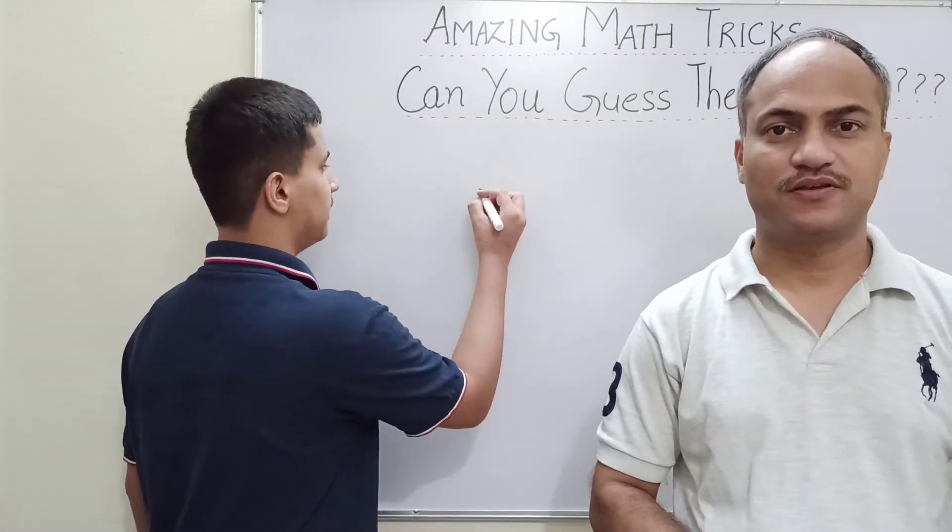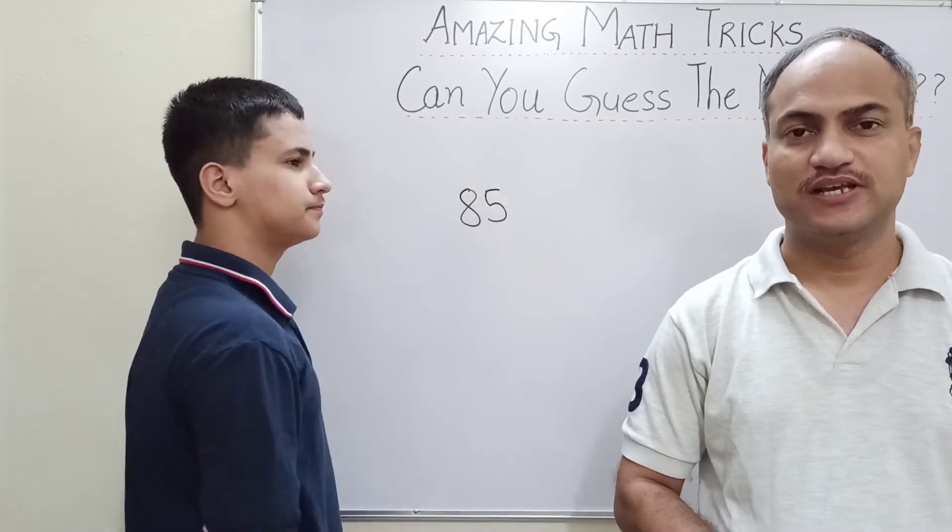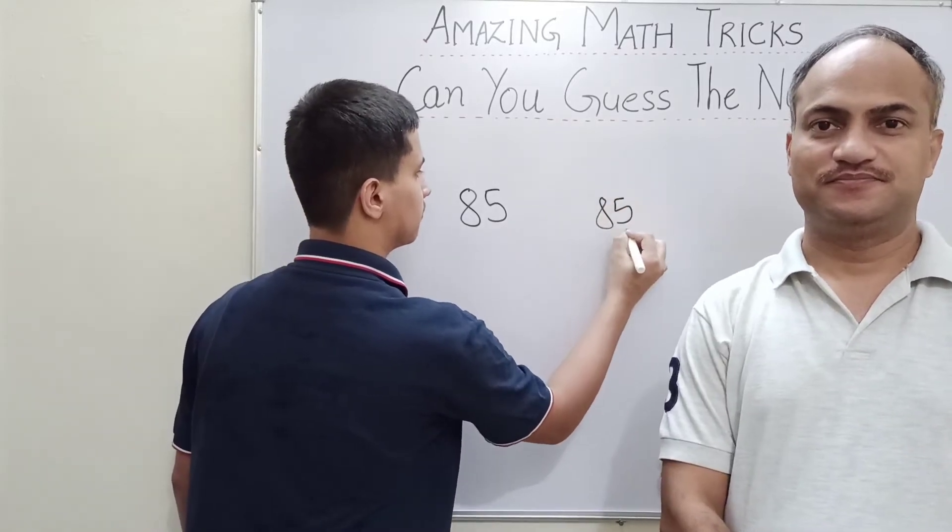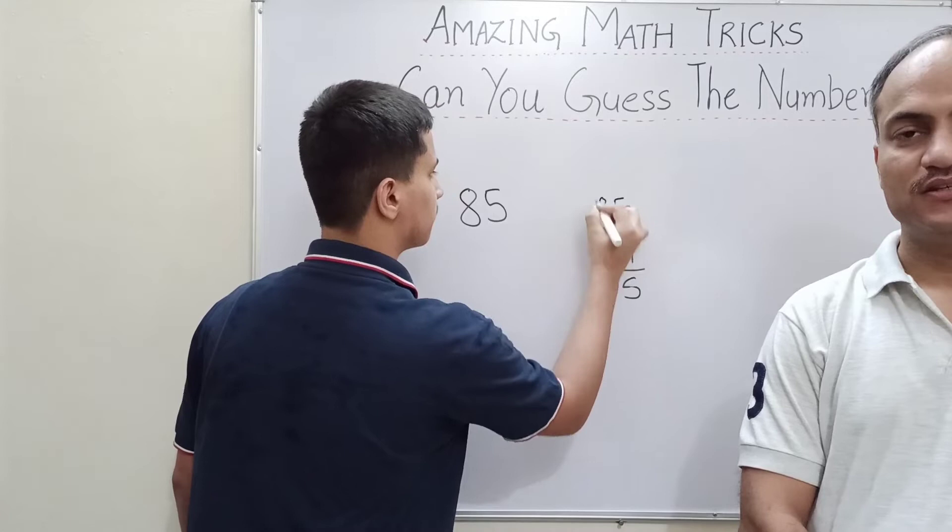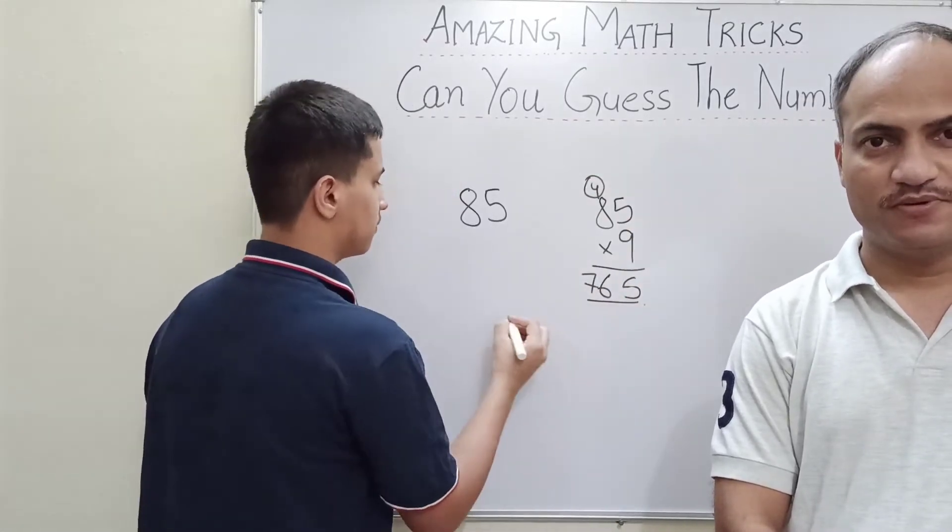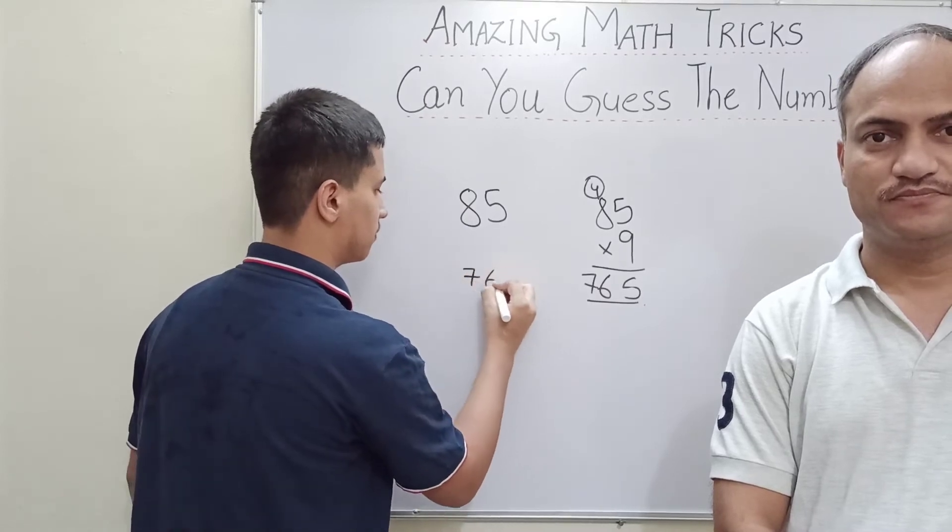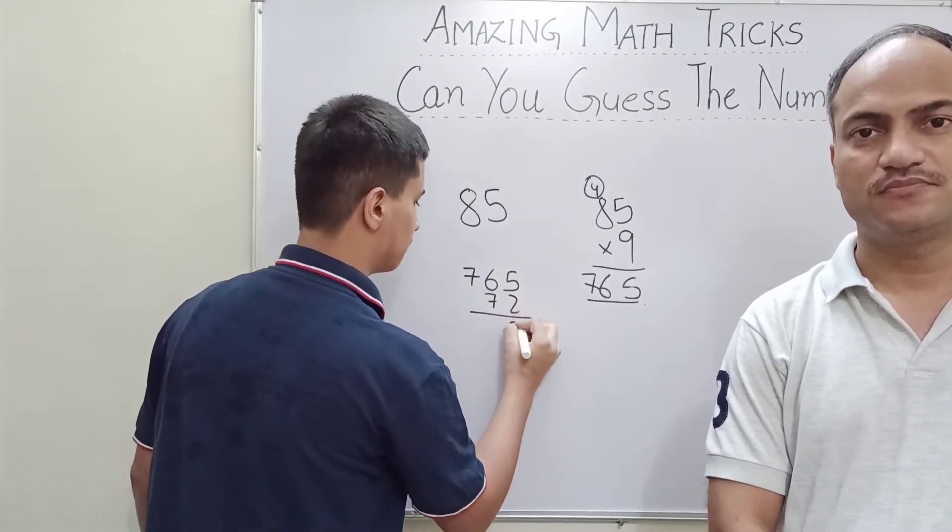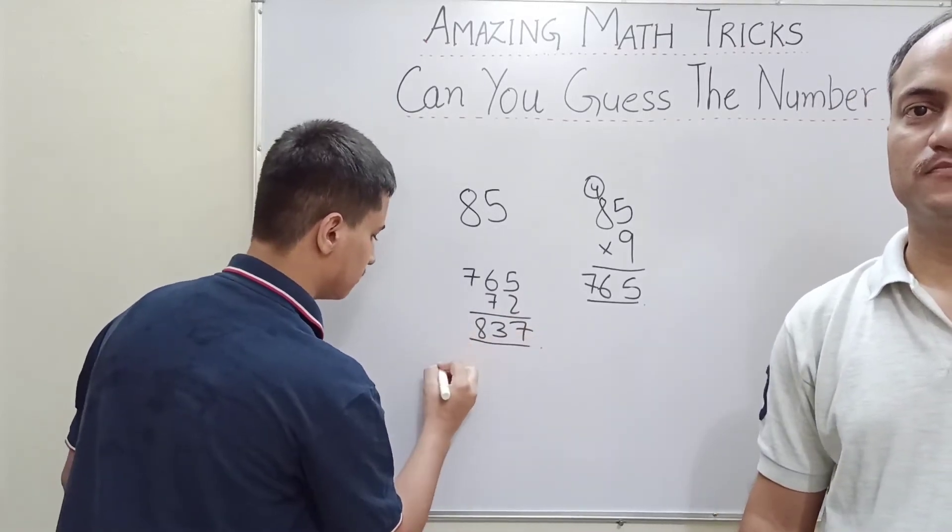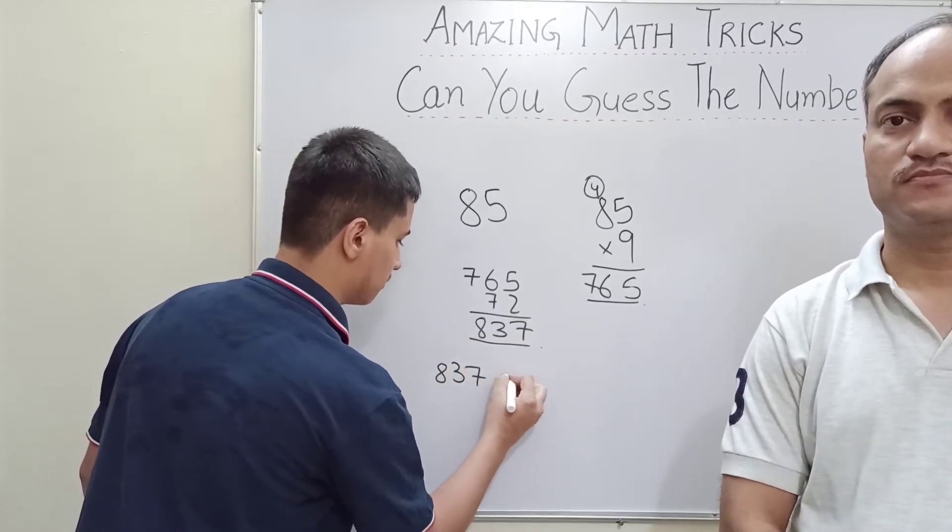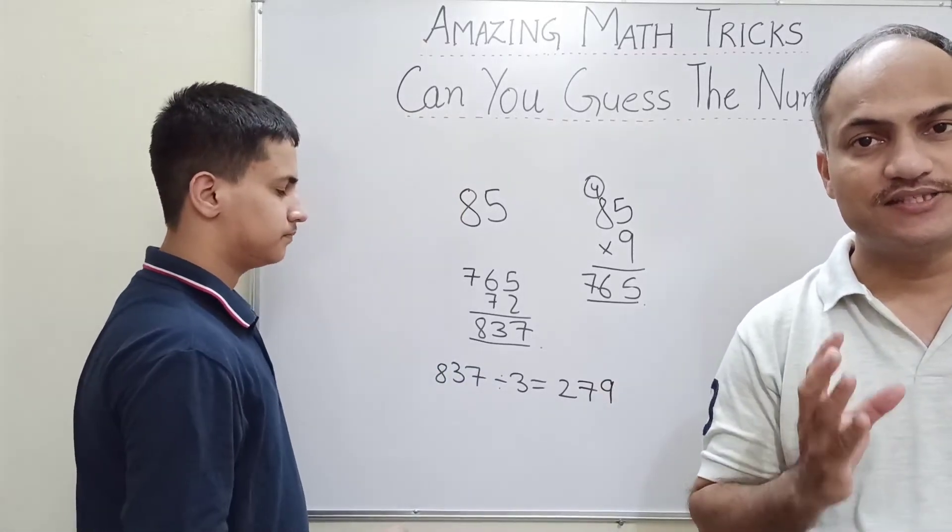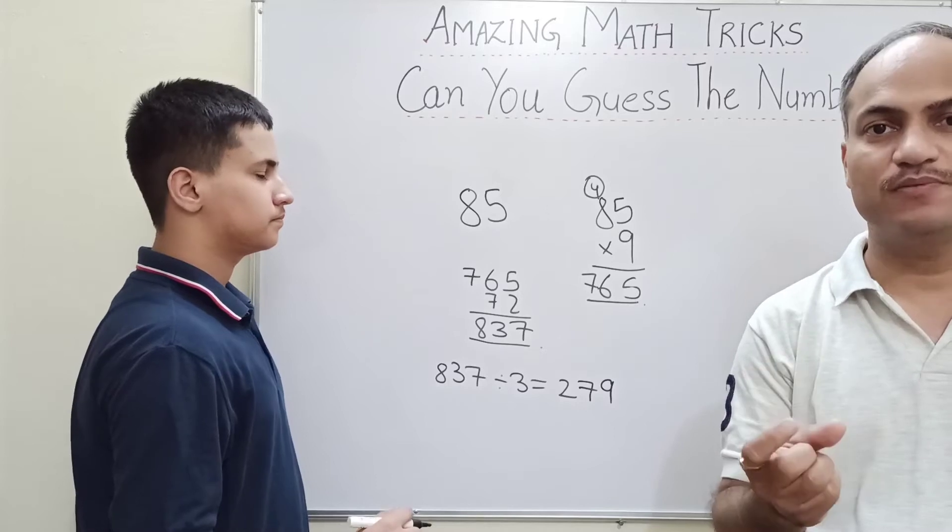Now multiply the number by 9. Now add 72 in the number. Divide the answer by 3. Now add 3. Now add the same number which you thought initially—add that in the result.